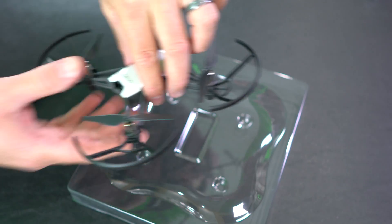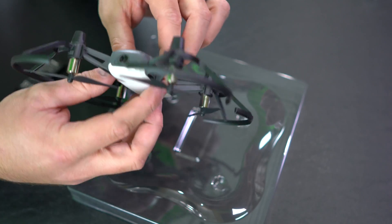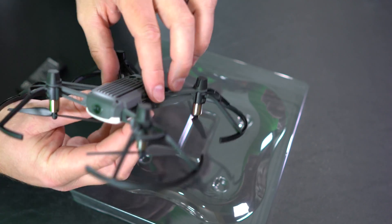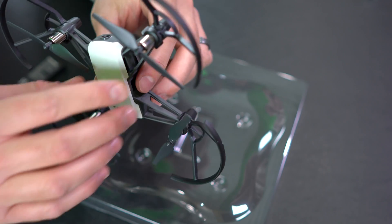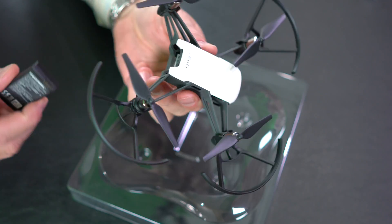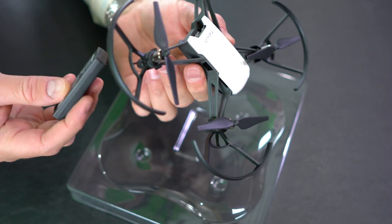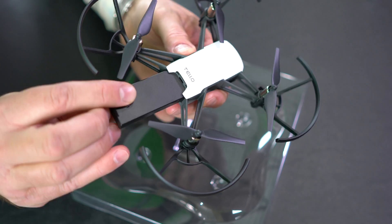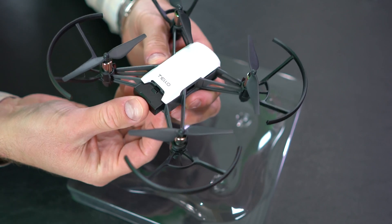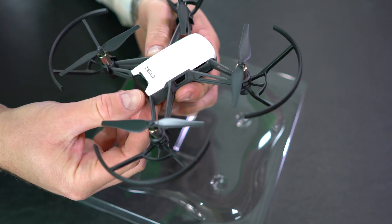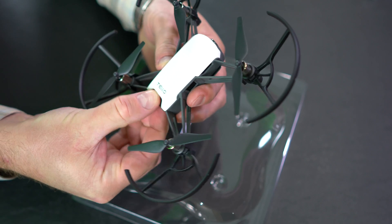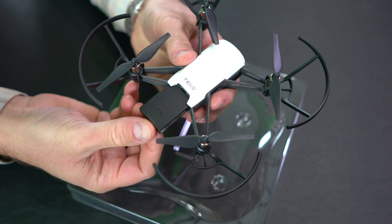Also worth mentioning if you were expecting any sort of cables, mine didn't come with any sort of cables. So I mean this is a very minimalist kit. Again just the battery, prop wrench and some extra props. So there's not a lot that comes with it.